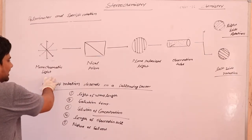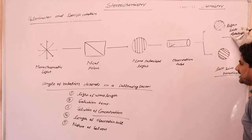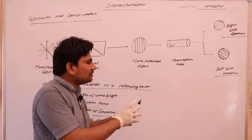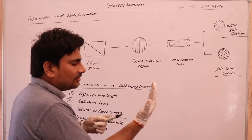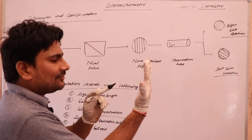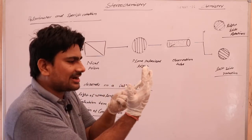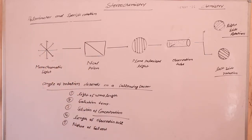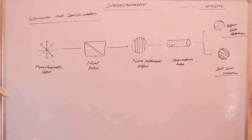Monochromatic light passes through a nickel prism to become plane polarized light, which is then passed through an observation tube. If the vibration rotates to the right side, it is called dextro rotatory; if to the left side, it is called levo rotatory. An analyzer placed on the other side of the source measures the rotational angle. Our next topic is specific rotation.